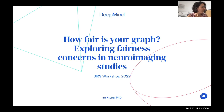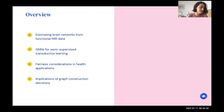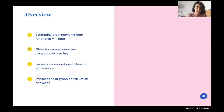This builds on past work from the late days of my PhD. At a high level, I'm going to talk about how we can estimate brain networks from functional MRI data and how we can use this data to perform semi-supervised transductive learning with graph neural networks. Then I'll introduce fairness considerations relevant to neuroimaging applications and the implications of graph construction decisions in population graphs.